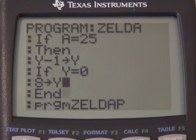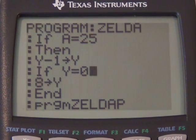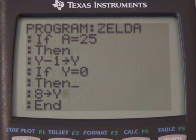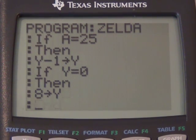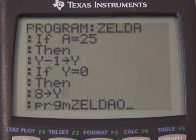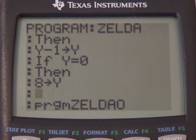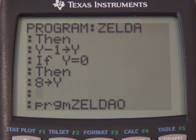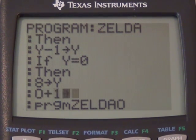And then if we move up, we have to do the same thing. So if Y equals 0, then eight stores Y. Program Zelda O, and we need to increment the Y value. So O plus one stores O.